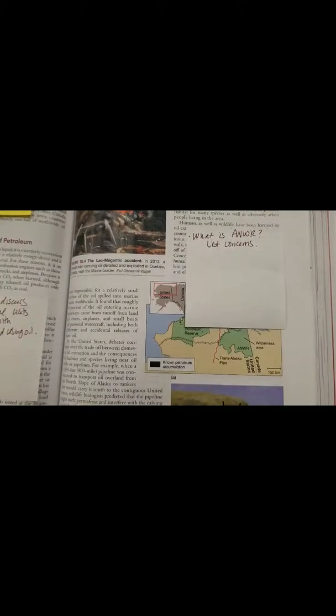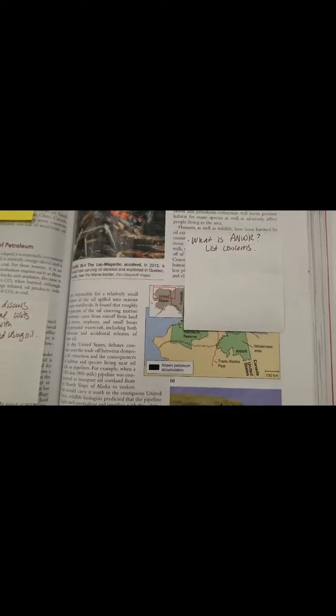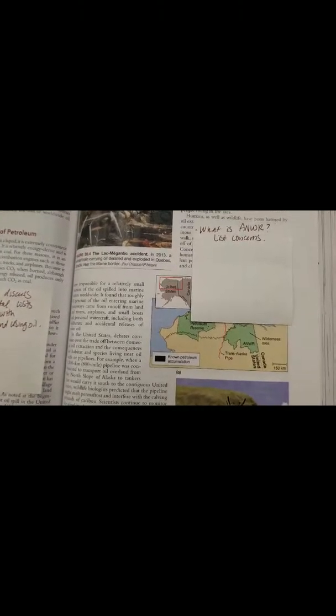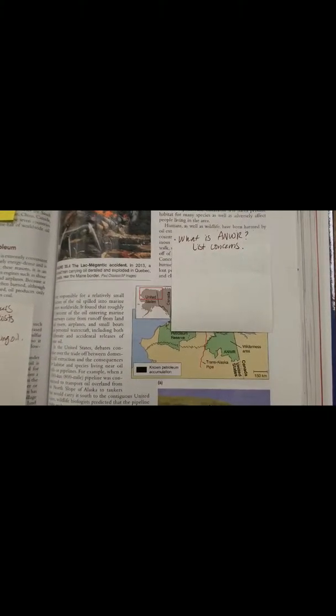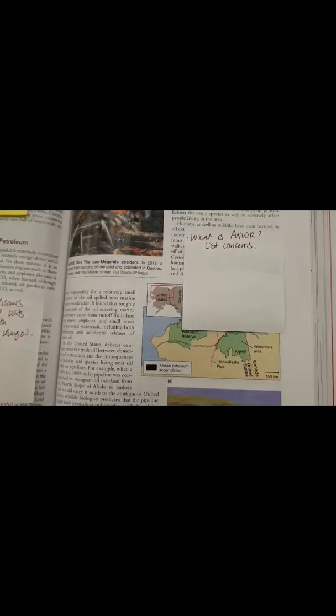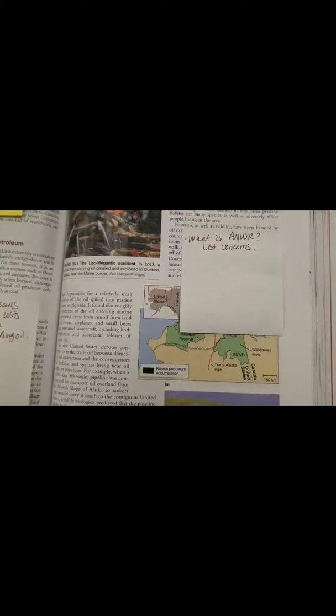Moving over to this side, we have ANWR. This is a highly debated resource of petroleum, and it's found in Alaska. The debatable part is it's found under some really natural pristine land, wildlife habitat that is unique to that area. A lot of environmental issues are brought up with should we drill? Should we get that petroleum? Or should we leave it? There's a lot of debate on that. Make sure you understand what that is and list any concerns that environmental scientists have for that.